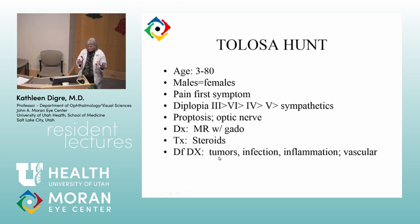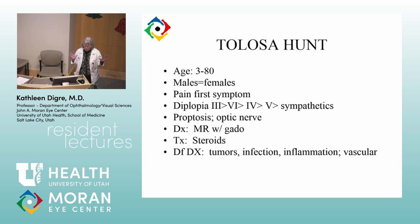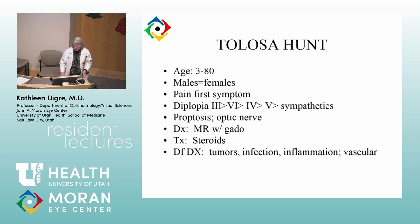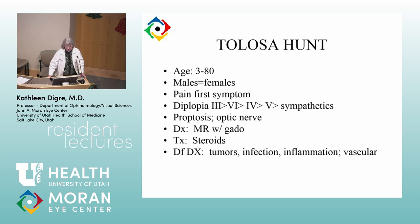In Tolosa-Hunt, the third nerve is almost always involved, with sixth, fourth, fifth, and sympathetics variably involved. You can rarely see proptosis or optic nerve involvement. You must do an MR with gadolinium, and steroids are the treatment. But it can be due to tumors, infection, and other disorders. So it is really one of those difficult diagnoses where you have to pull out all the stops. Tolosa-Hunts are notorious for harboring nasty things — you really have to work it up completely.